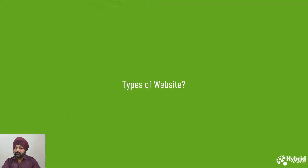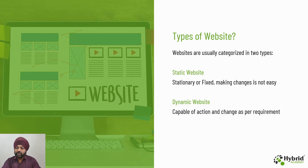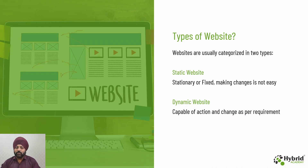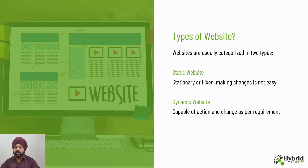Now let's look at the types of websites. We majorly segregate websites into two divisions: static and dynamic. A static website is a stationary or fixed website in which making changes is not easy. Every time you want to make a minor change, you have to contact your developer or designer, and they will make the changes through code. Usually very small organizations that just need a web presence to show their services, products, and contact information prefer static websites.